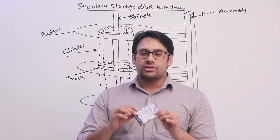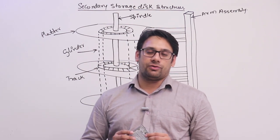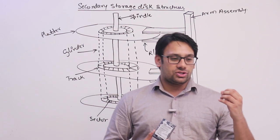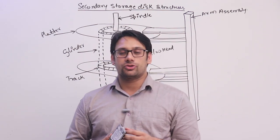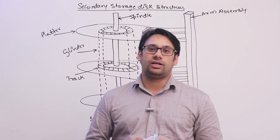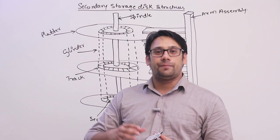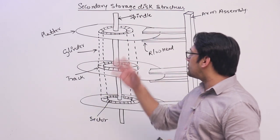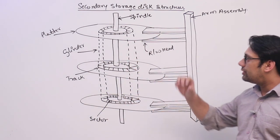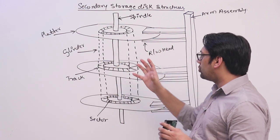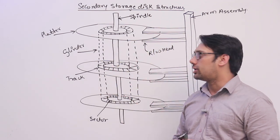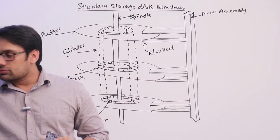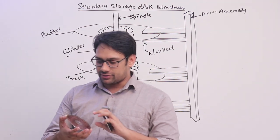We are going to study how these drives are made up of — what are the elements in this drive, how data is stored, how you retrieve data from the hard disk, and what are the different forms and structures of the hard disk. Now in this drive we have something called a magnetic disk.